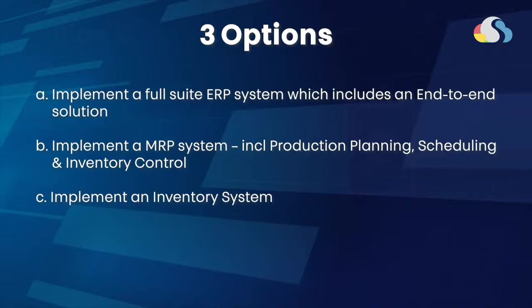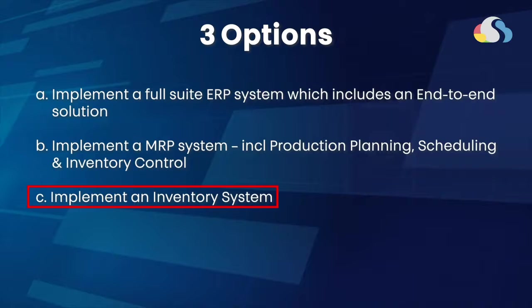MRP is also great; however, it will still involve some sort of production planning and scheduling. Personally, I think it's great, but I don't think they really need it yet. What I'm going to suggest is Option C — only focusing on data capture — and this is what I call following the 80/20 rule. Just by doing this inventory control part, they have all the insight they need already.